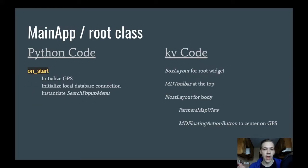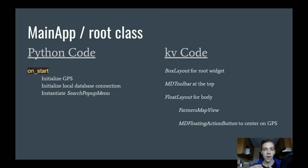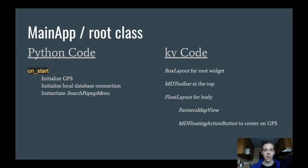So the main app or the root class — I want to keep this very bare bones because I want the logic to be in other classes. For my main.py Python code, I'll have the onstart method defined in my main app class. That should initialize the GPS, start the database connection, and instantiate the search pop-up menu — that's when you click on that search bar. It'll be instantiated but not open. And then in the KV code, the root widget hierarchy will use a box layout with an empty toolbar at the top, then a float layout as the main body. Inside there I'll have the map view — which I'll call a farmer's map view — as well as a floating action button in the bottom corner. You can put widgets on top of each other inside a float layout, so that's why I'm using it for the body.